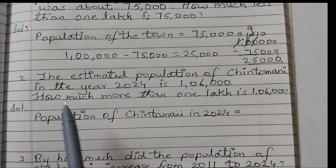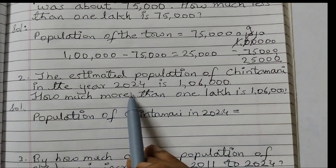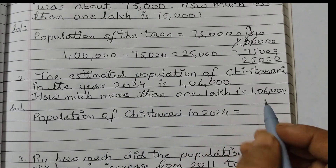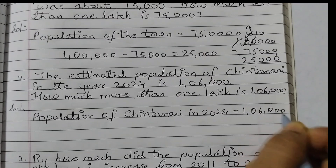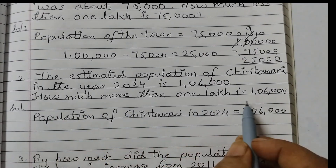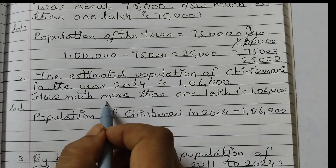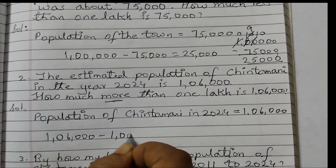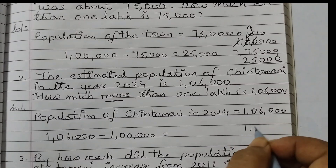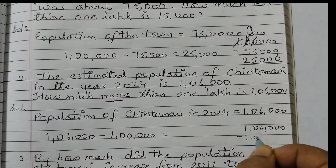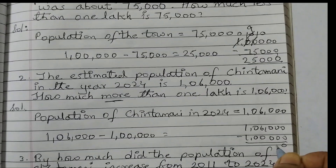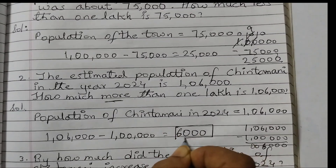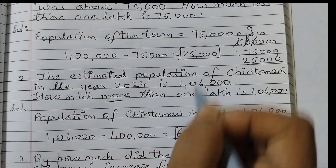The next question is: the estimated population of Chintamani in the year 2024 is 1,06,000. This is an estimation. How much more than 1,00,000 is 1,06,000? We subtract: 1,06,000 minus 1,00,000 equals 6,000. So the answer is 6,000 more.